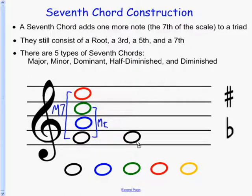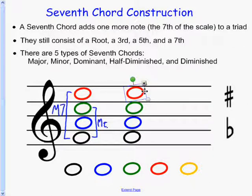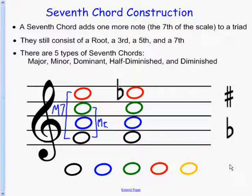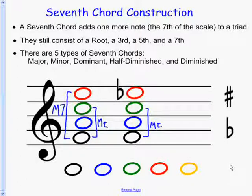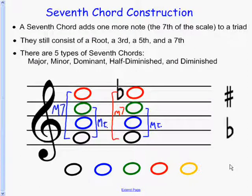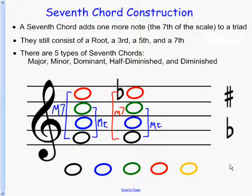Let's build a different one. We'll still keep the same notes: F, A, C, and E. But this time we're going to lower the seventh. That creates a major triad on the bottom, but gives us a minor seventh on top. So this is called a dominant seventh chord, also called a major-minor seventh chord. The only difference between that and the major seventh is the flat seventh.